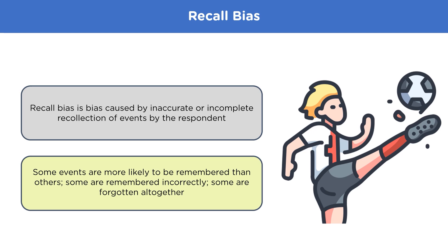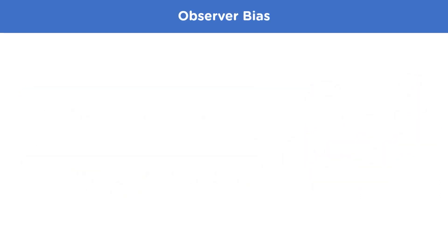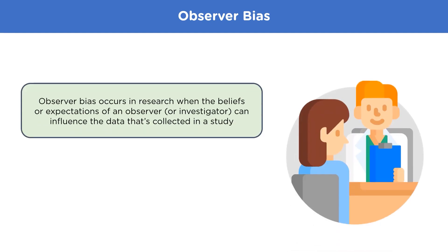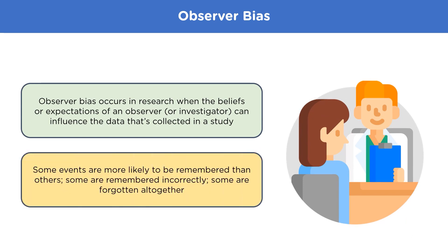Another type is observer bias. Observer bias occurs when a researcher subconsciously projects their expectations onto the research, influencing the data collected. For example, suppose a news channel, in the race for higher ratings, presents inaccurate or even false news but tries to prove the information is correct. In this case, the observer — the news channel — is forcing its opinion onto the data, and observer bias occurs.